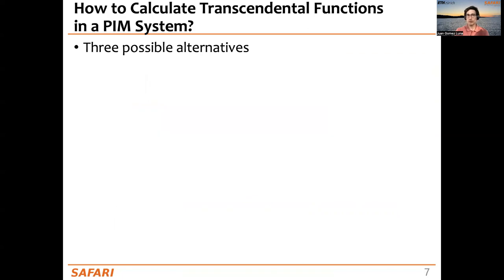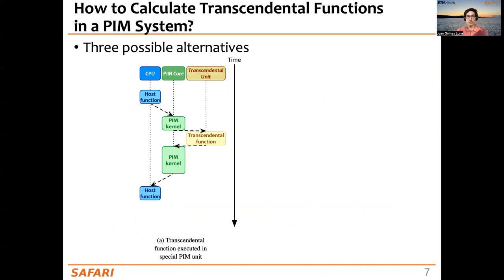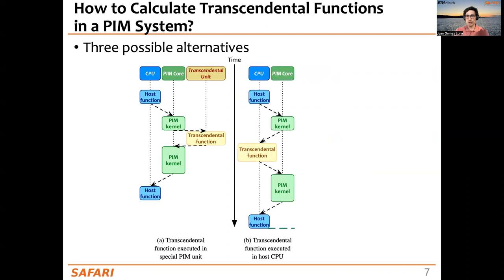The question is how to calculate transcendental functions in a PIM system. We can think about three different alternatives. In the first one, we would have a transcendental unit near or inside the PIM core — whenever we need to compute a transcendental function, we offload it, compute, and then continue execution. But this is unrealistic because the area of PIM units is very constrained and it's very unlikely we can fit a transcendental unit. The second alternative would be to stop the PIM kernel, move data to the CPU, compute the transcendental functions, and return the result — which is costly in terms of data movement.